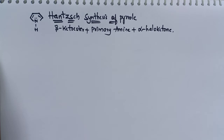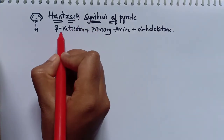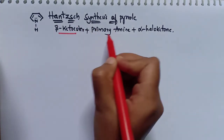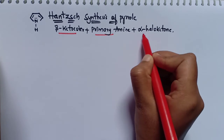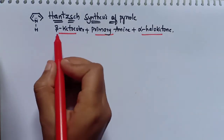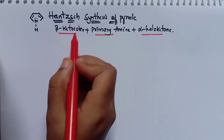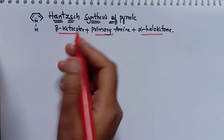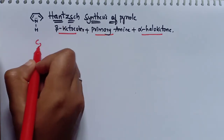Now, coming to this Hantzsch synthesis of pyrrole, we need three reactants: a beta-keto ester, a primary amine, and an alpha-halo ketone. I will now write the structure of the beta-keto ester.